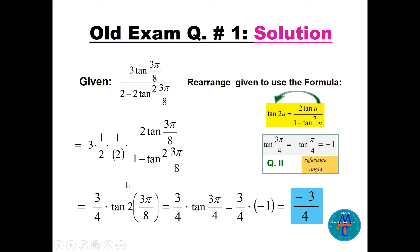The big expression equals tan(2·(3π/8)) = tan(3π/4), with a factor of 3/4 outside. Now 3π/4 is in quadrant 2; using the reference angle, π minus 3π/4 equals π/4, and tangent is negative in quadrant 2, so tan(3π/4) = -1. Multiplying gives the final answer: -3/4.